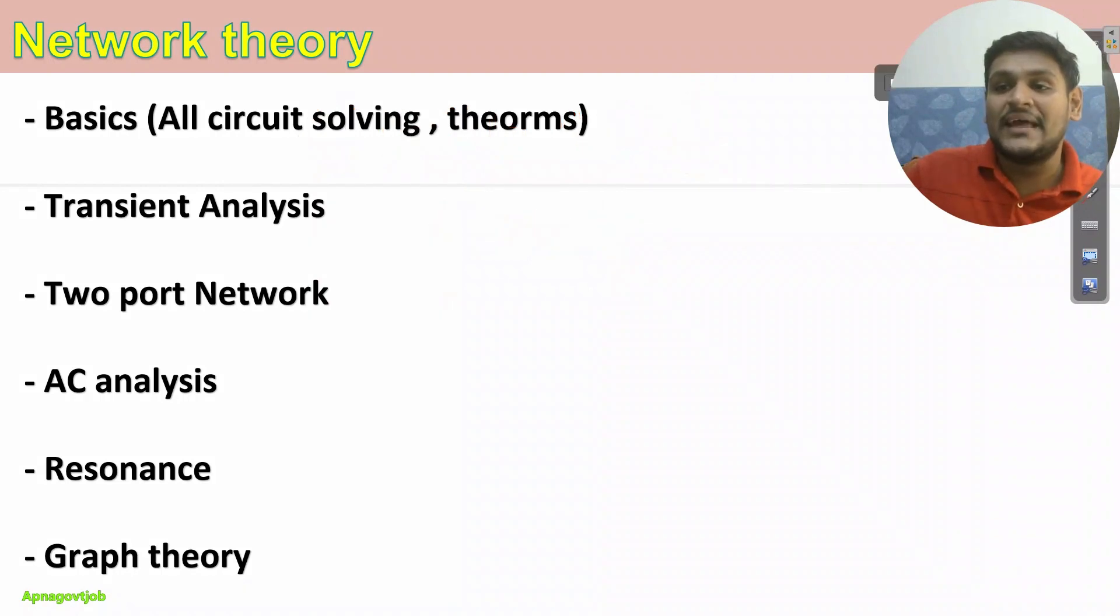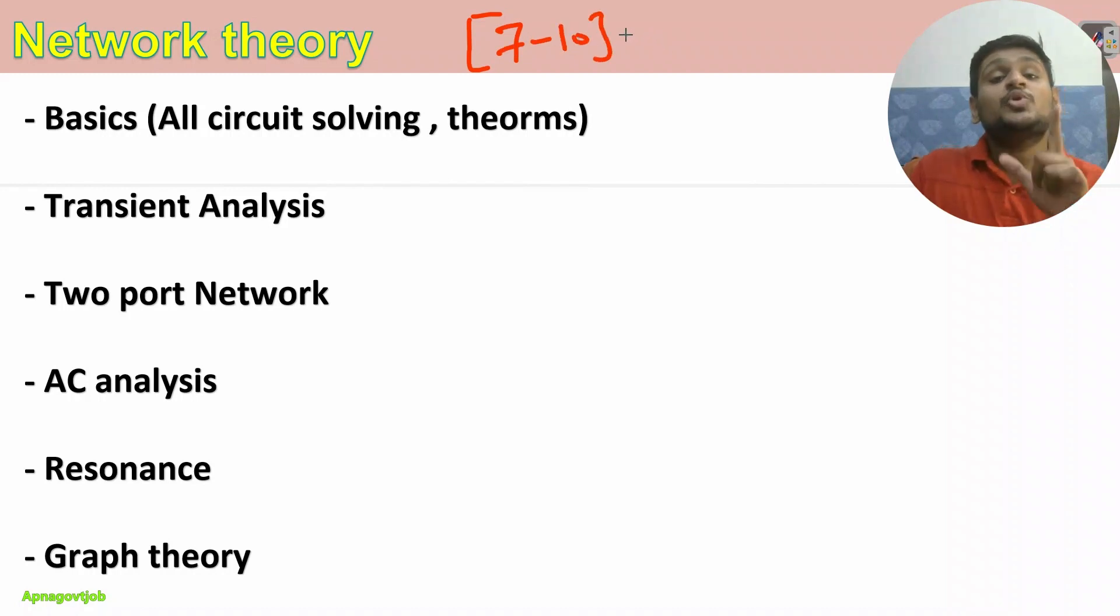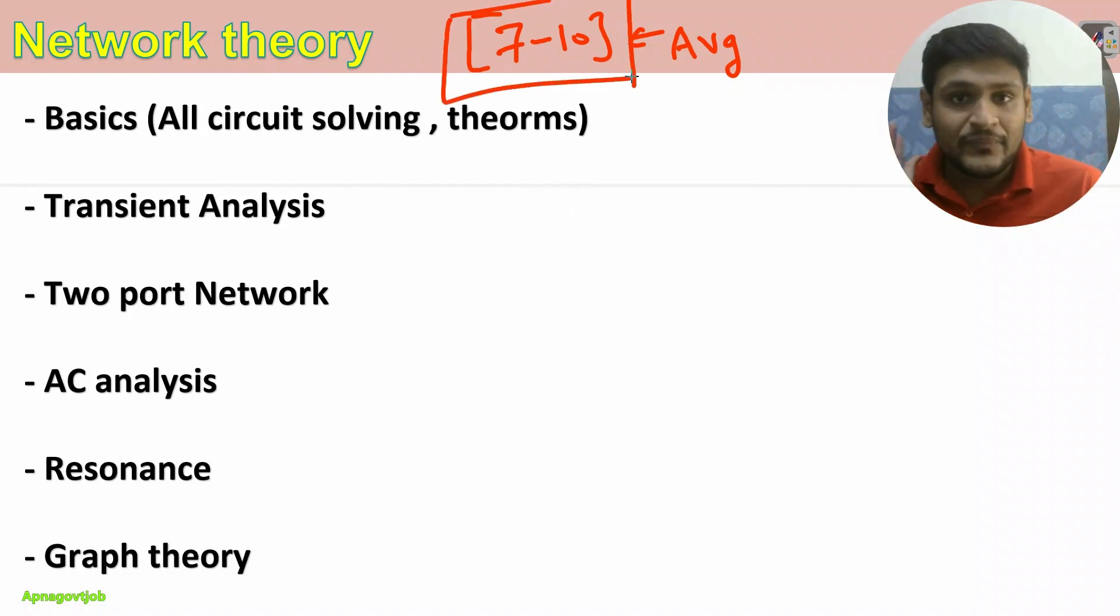First subject is network theory, very important subject for BARC. For the year 2023, we can expect somewhere around 7 to 10 questions. This is an average because if there are two or three shifts, some shifts may get four questions, some may get ten or fourteen questions, but average you can expect 7 to 10 questions from network theory. What you need to study: basics, all circuit solving techniques whether it is KVL, KCL, voltage divider, current divider, and lots of theorems like superposition, maximum power transfer, reciprocity theorem. From here you can expect around two questions.